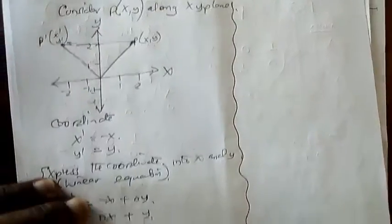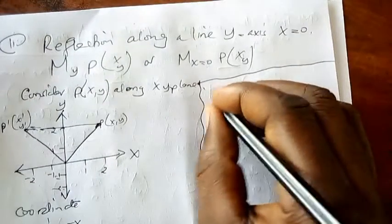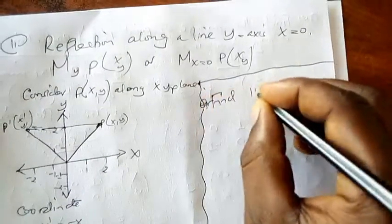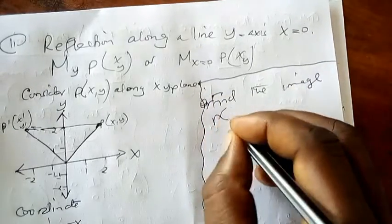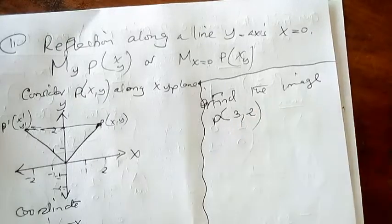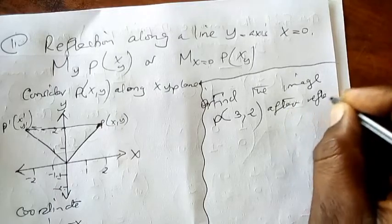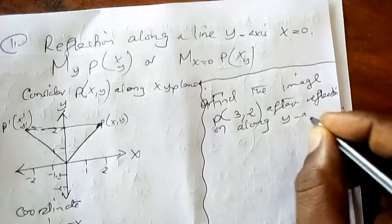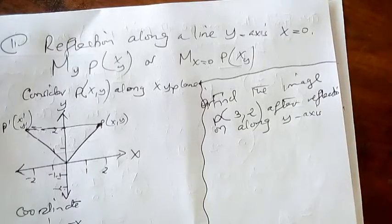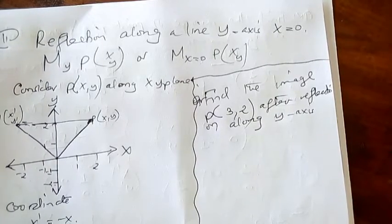Let us see the example. Example number one states that: Find the image, maybe the point given is (3, 2), after reflection along the y-axis. Once you see y-axis, it means that x is equal to 0.